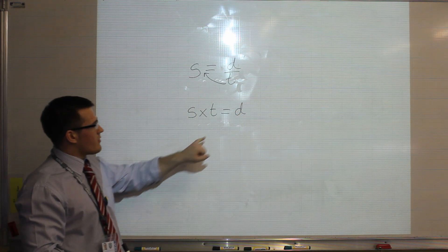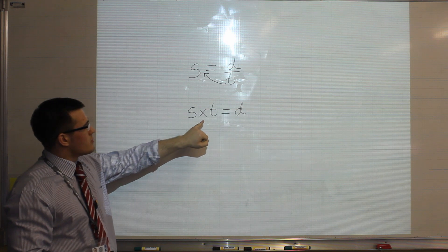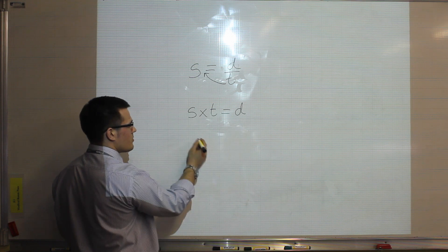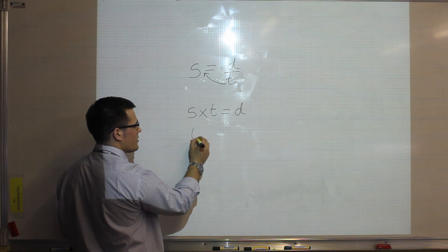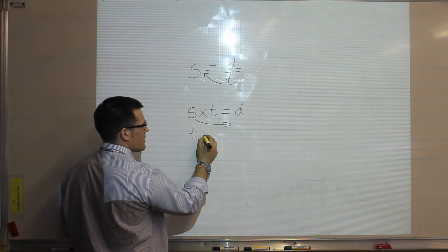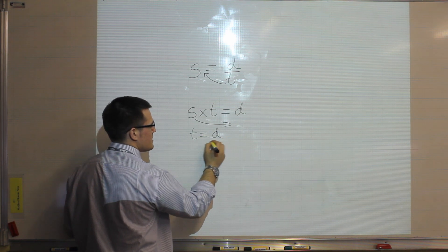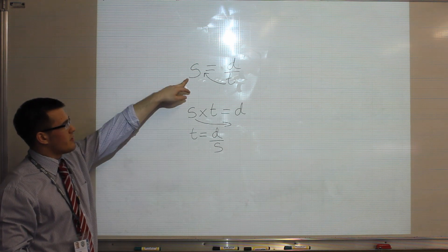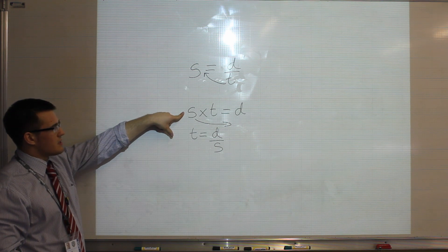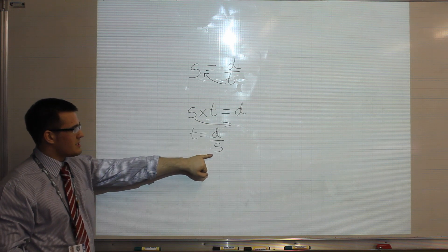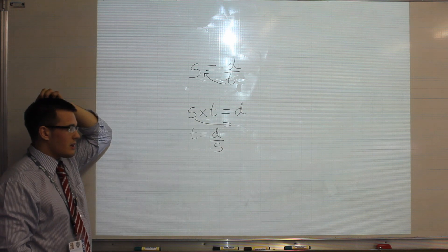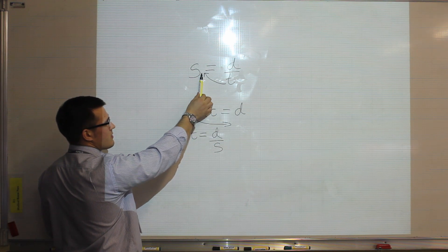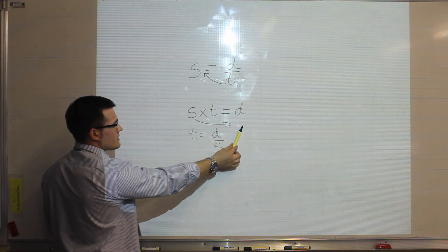What I could then do is, if I wanted the equation in terms of time, I could move speed back down — so I can move across the equation — and I would end up with time is equal to distance divided by speed. So I've rearranged that equation to give me speed, then distance, and then time. The rule is you do the opposite function always: if it's divided by, you times it; and if it's multiplied, you divide it.